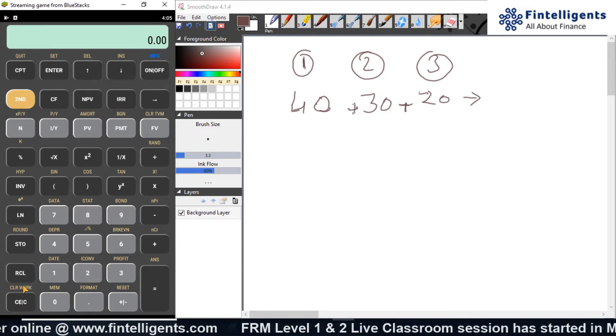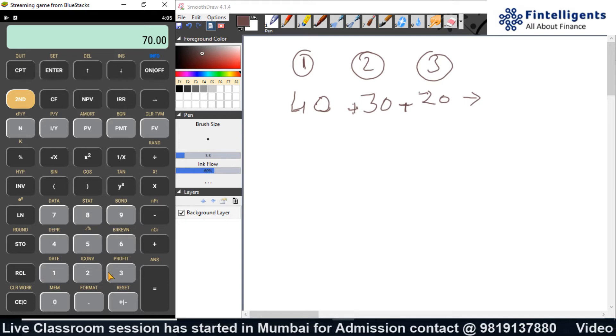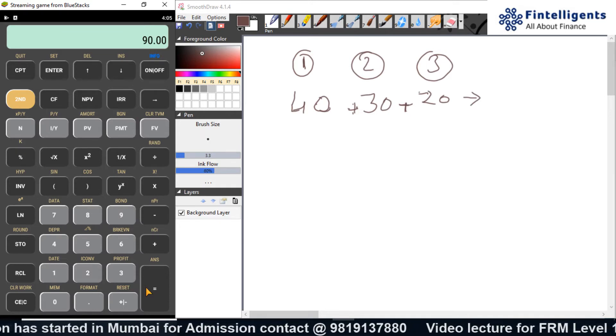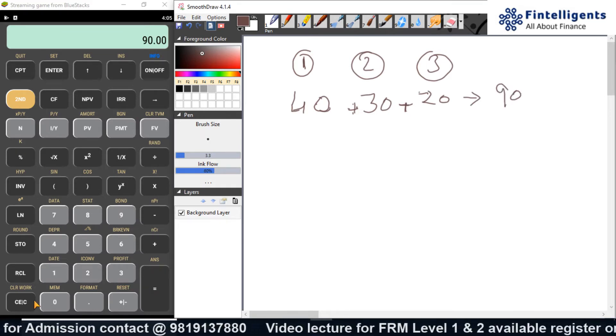And then I will have to recall each number and add. So, recall 1 plus recall 2 plus recall 3. That will give me an answer of 90. But how do I use effectively?